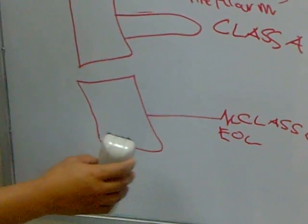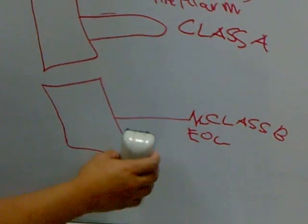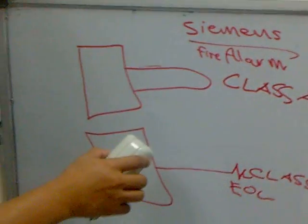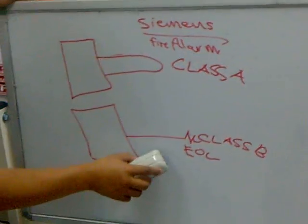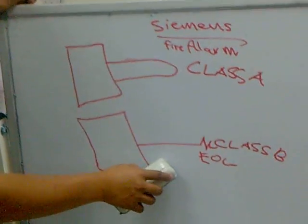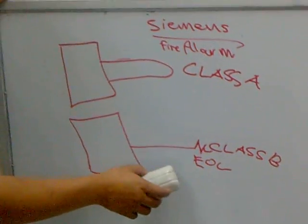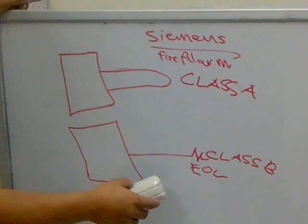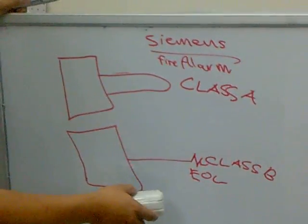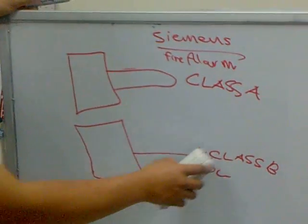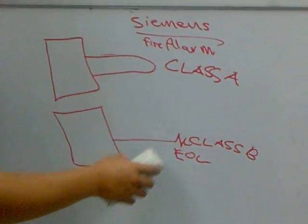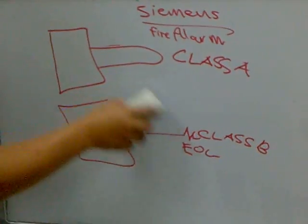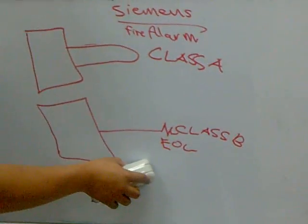This is our loop — two types of loop. Actually, this is not called a loop, it is called a circuit. We don't call this a loop, we call it a circuit, because it's not a closed loop. And this is Class A and this is Class B.